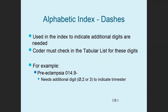Dashes: in some index entries, you will see a dash following a code. This means you need additional digits, which you'll find in the tabular list — another good reason to never code from the alphabetic index alone. For example, preeclampsia is 014.9 with a dash, meaning you need an additional digit for trimester.